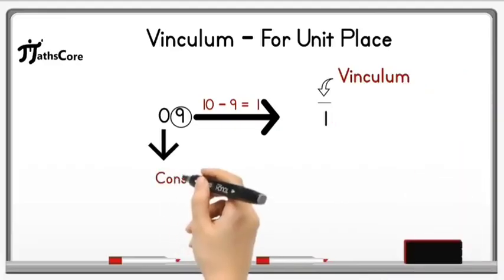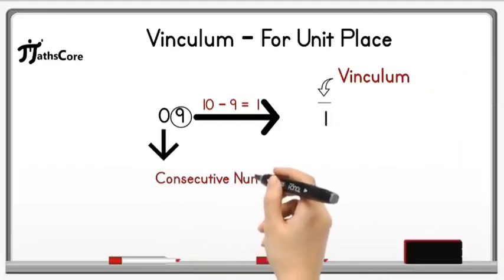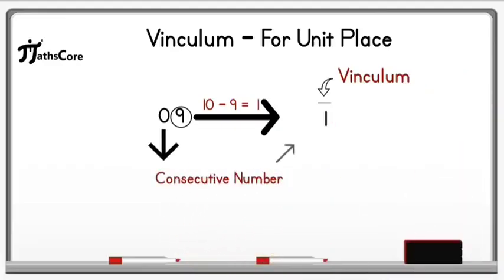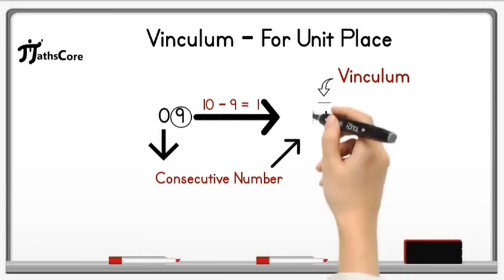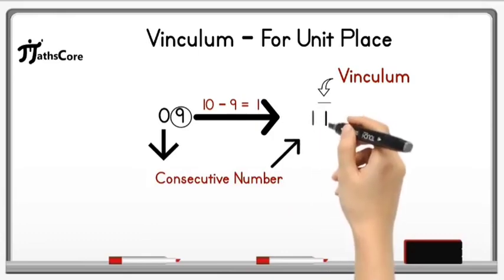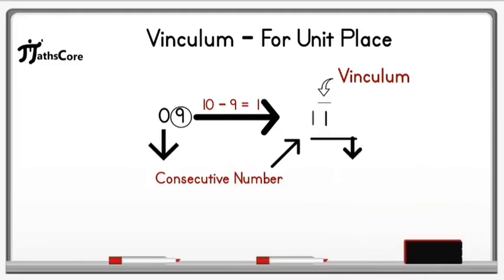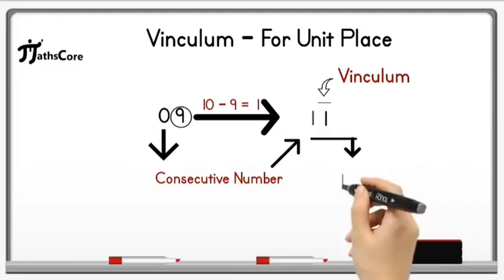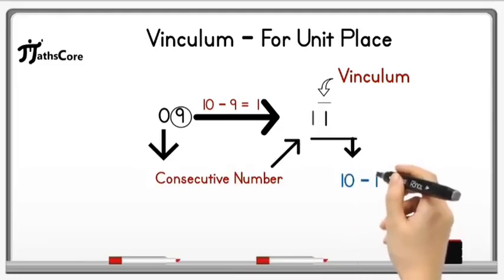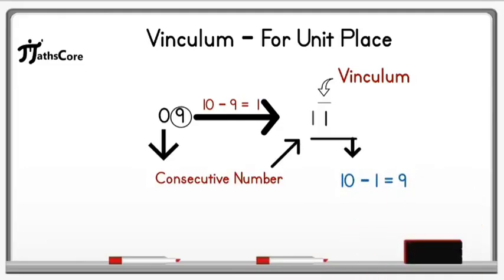Now think about 0. We have to find the consecutive number of 0, which is 1. So write down 1 before vinculum-1. The meaning of that is: 10 minus 1 equals 9, which equals 09.